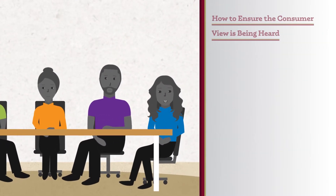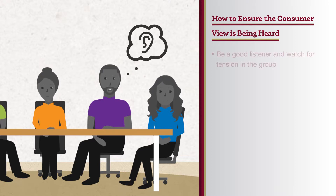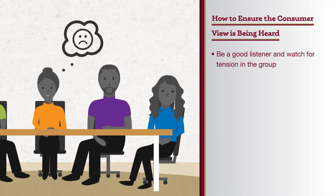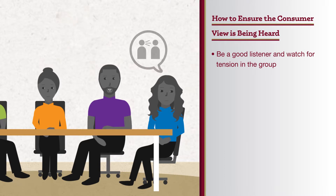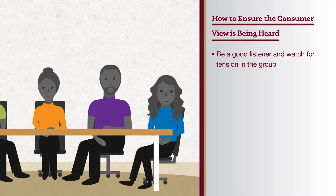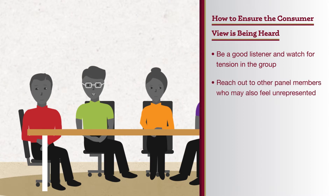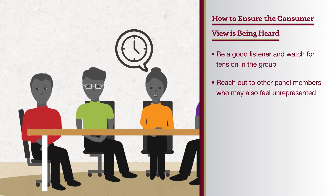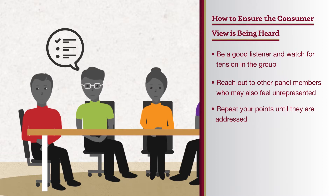The needs and views of other panel members may dominate those of consumers, but a consumer can turn this situation into an advantage. Be a good listener and watch for tension in the group. Examples of tension include domination by a vocal minority, nonverbal signs of frustration or disagreement, and passive or active intimidation of others. Use this tension to time the right moment to speak up, and reach out to other panel members who also feel unrepresented. If needed, request a break to have informal discussions with them.